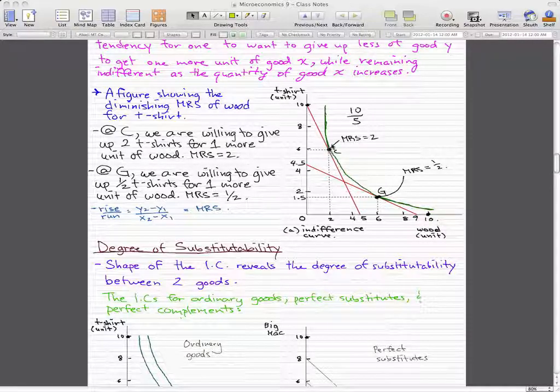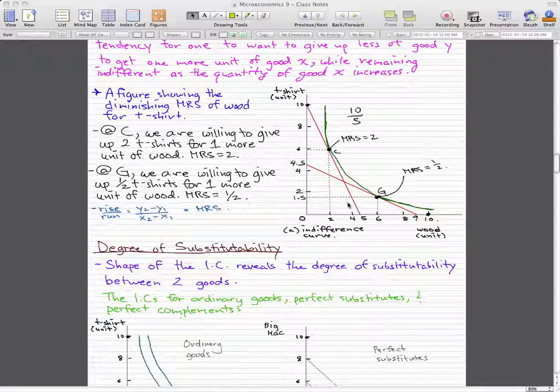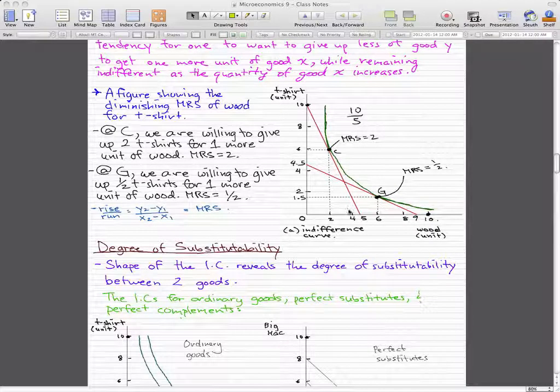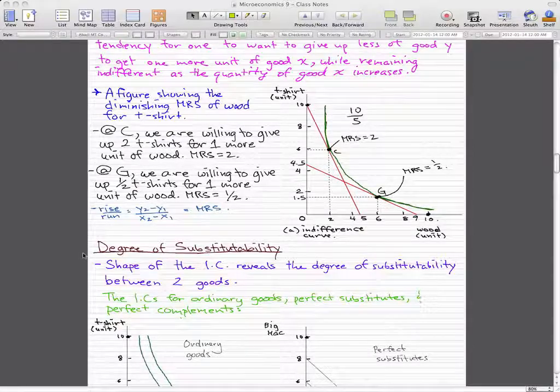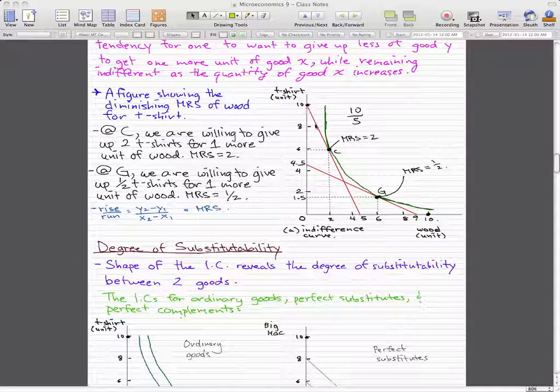Now how I got these numbers, two and one-half, is I used rise over run, something you should have learned in high school. I drew a tangent on point C and used rise over run for this line.